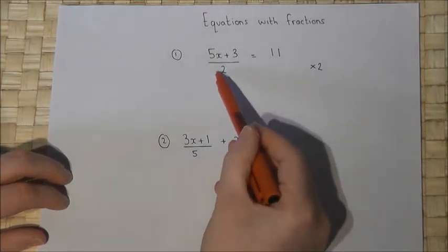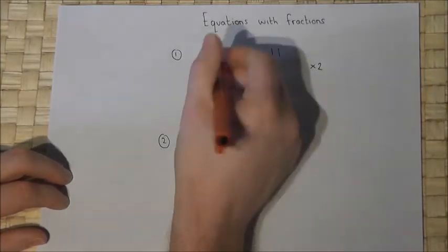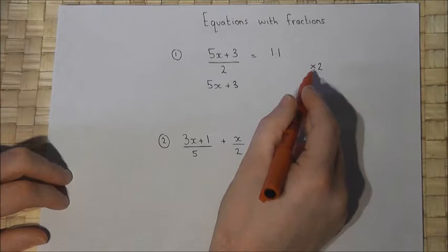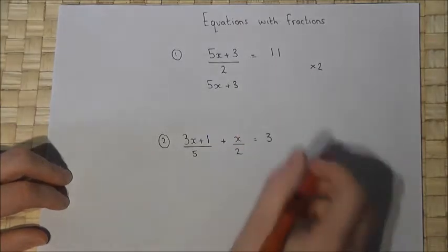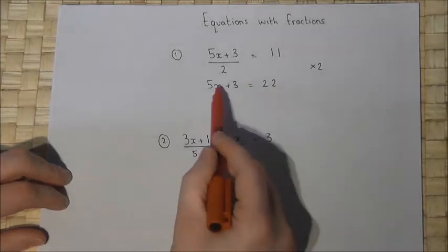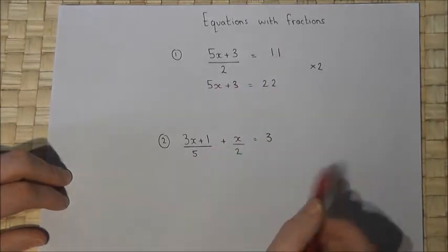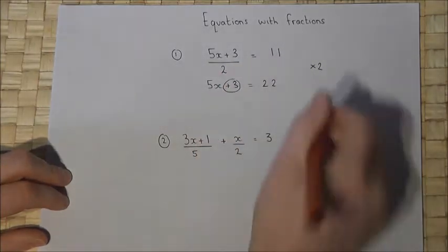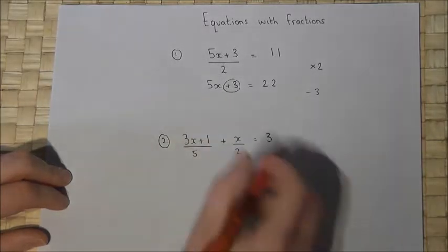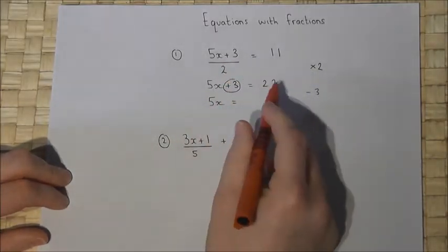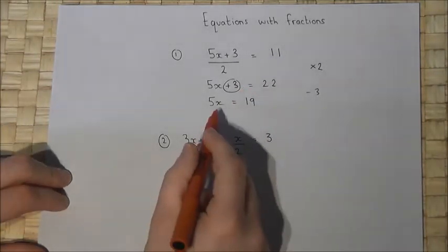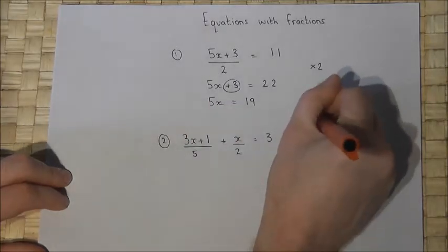Multiplying by 2, the 'over 2' cancels off, leaving 5x plus 3. The right-hand side becomes 22, and we're back to the basic equation type. There's a plus 3, so I subtract 3 from both sides; the plus 3 cancels off, so 5x equals 22 take 3 which is 19. Dividing by the coefficient of x, which is 5, gives x equals 19 over 5.